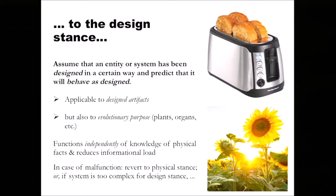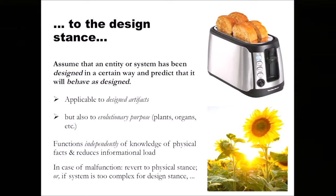But we might move from that sort of stance to the design stance for other kinds of entities or systems. Here, what we do is assume that the entity or system in question has been designed in a certain way, and we predict that it will behave as designed. This is obviously applicable to designed artifacts like toasters, but the design stance is also applicable to things like plants or organs like a heart. They seem to have a functionality — their purpose is to serve some function — and we can predict their behavior by whether they serve those goals well or badly.